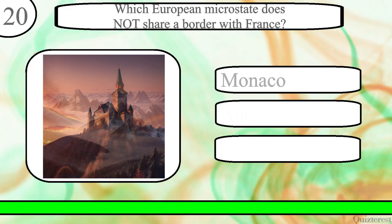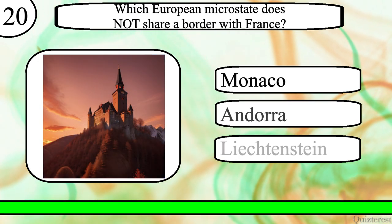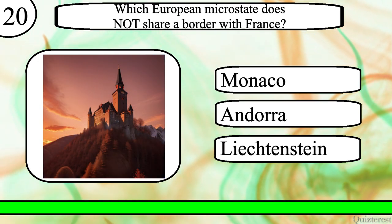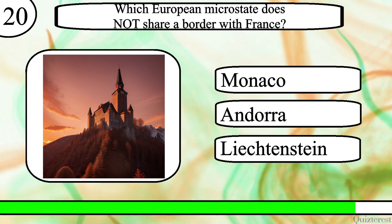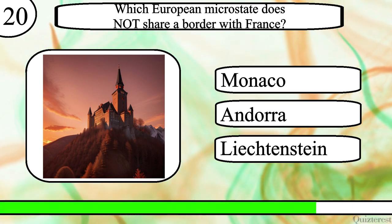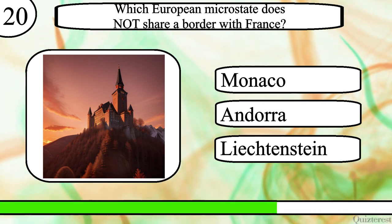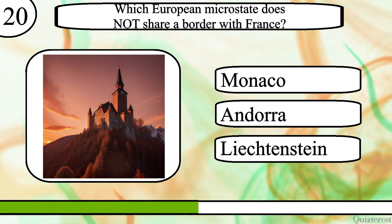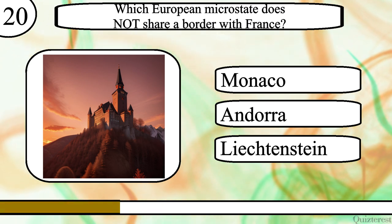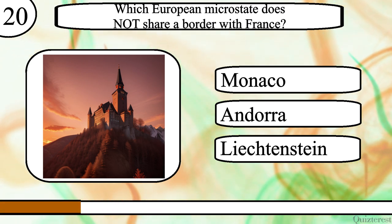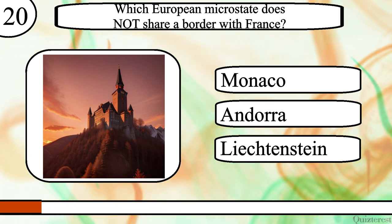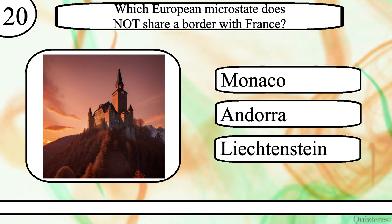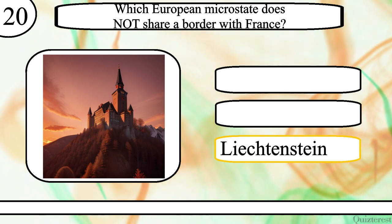Question 20. Which European microstate does not share a border with France? Monaco, Andorra or Liechtenstein? The correct answer is Liechtenstein.